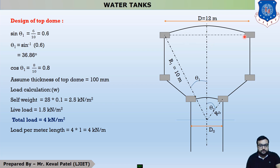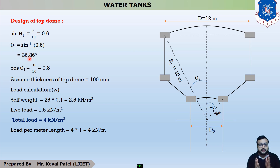The diameter of the top dome is 12 meters. The half portion is 6 meters on each side, and this is radius R1. This radius is 10 meters. So first, we have to find sine theta1 and cos theta1. For sine theta1, the equation is: sine theta equals 6 divided by 10, so sine theta1 equals 0.6, giving theta1 equal to 36.86 degrees — already calculated in the last lecture. And cos theta1 equals cos 36.86 degrees, which is 0.8.